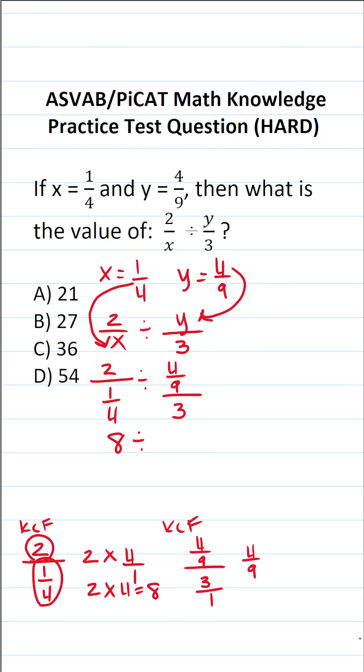I'm going to change from division to multiplication and flip the fraction in the denominator. So instead of being 3/1, it's going to be 1/3. When you multiply fractions, you just multiply straight across. This becomes 4—4 times 1 is 4, and 9 times 3 is 27.